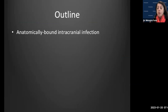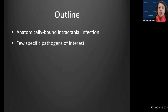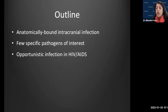I have no disclosures. The outline is straightforward: we'll first talk about infection by compartment of the brain, going from outside working inward. Then we'll cover a few specific pathogens of interest with specific imaging patterns. Finally, we'll spend time discussing opportunistic infections seen in HIV/AIDS and other immunocompromised states.